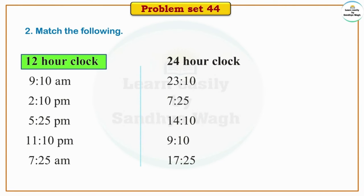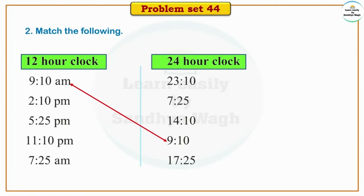Now, Match the Following. 12-hour clock timings are given on one side and 24-hour clock timings on the other — we need to match them. First: 9.10 AM. AM means ante-meridiem — the time before 12 noon. In the 12-hour clock it is 9.10 AM, and in the 24-hour clock, since it is a morning time, it is shown as 9.10.